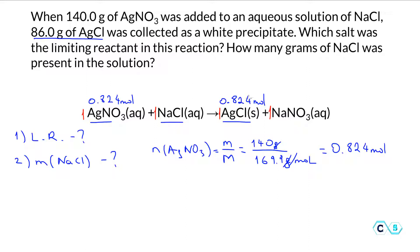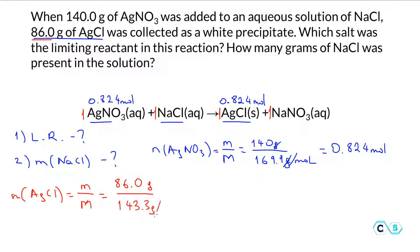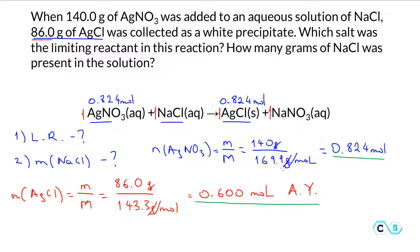Now what we want to do is compare this with what actually was formed. We know that there was 86 grams of silver chloride formed. To find the moles of silver chloride, we divide the mass by the molar mass: 86.0 grams divided by 143.3 grams per mole gives us 0.600 moles of silver chloride. This is the actual yield of this reaction.